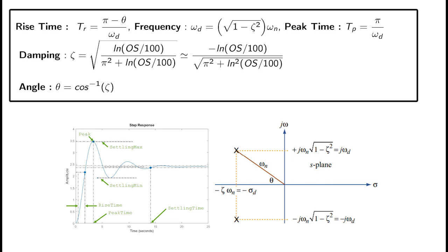The damped natural frequency omega_d can be related to omega_n by multiplying by the square root of 1 minus zeta squared, where zeta is the damping ratio. The damping ratio is a function of the overshoot: zeta equals negative ln(OS/100) divided by the square root of pi squared plus ln squared of OS/100. You can also relate the angle to arccos of the damping ratio. The peak time — how long it takes to achieve the maximum value — is pi over omega_d.